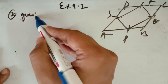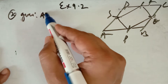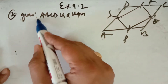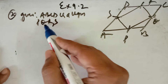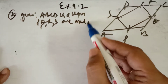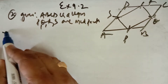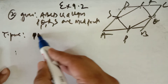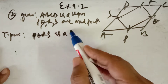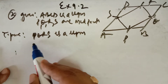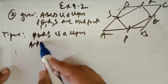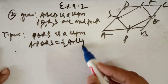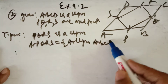Given that ABCD is a parallelogram and P, Q, R, S are the midpoints of their respective sides. You have to prove two things: first, that PQRS is a parallelogram; and second, that the area of PQRS is equal to half the area of parallelogram ABCD.